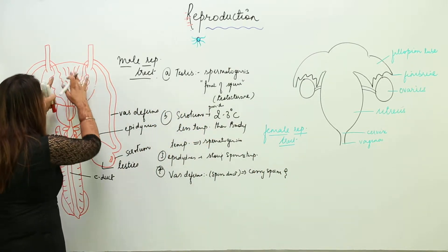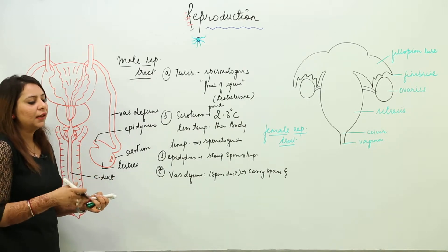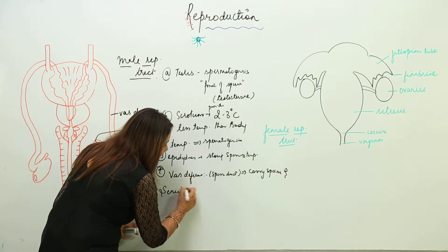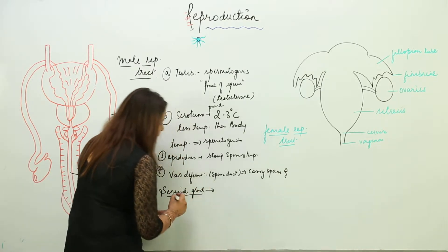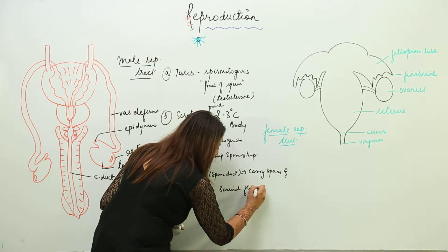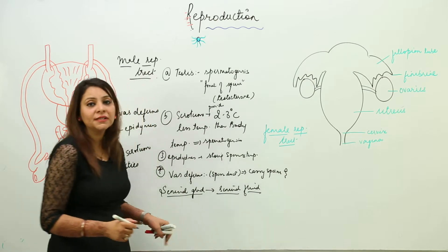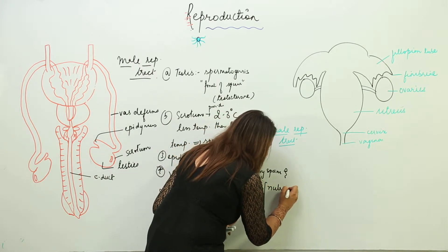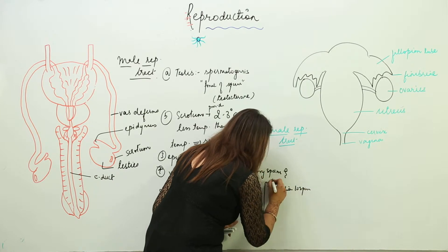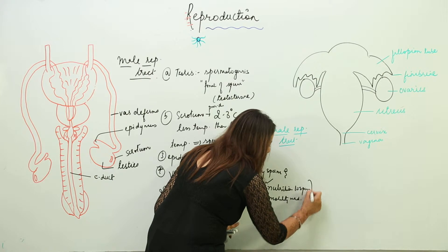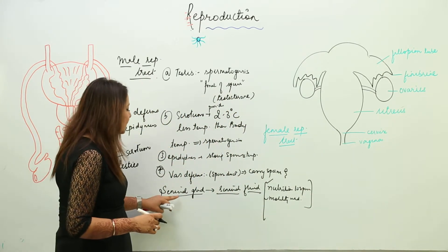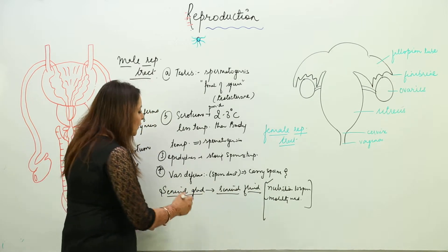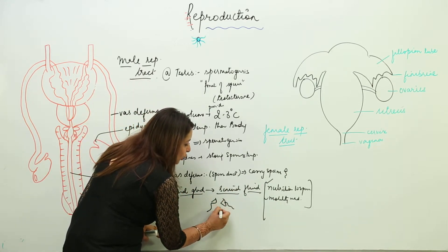Different glands are present in the male reproductive tract: the prostate gland and the seminal gland. The seminal gland produces seminal fluid, which mixes with the sperm. This fluid provides nutrition to the sperms and also provides the motility medium — that means it provides a medium so that the sperm can move.